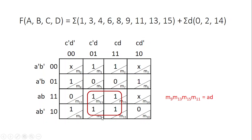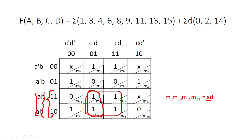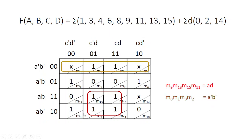We start with M9. I will write it in this order: M9, M13, M15, M11. Looking at M9 and M13 — A remains constant while B is changing, so drop B and retain A. Looking at M13 and M15 — C changes while D remains constant, so drop C. What is left over is A and D. So the first reduced term is AD.